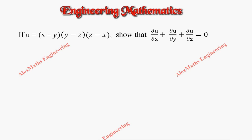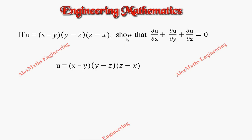Hi students, this is Alex here. u is given as (x minus y)(y minus z)(z minus x), and we have to show that ∂u/∂x plus ∂u/∂y plus ∂u/∂z equals zero. Let's take this u and find the first term ∂u/∂x.